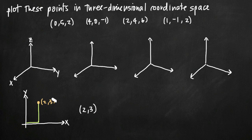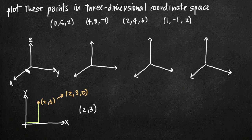So if we wanted to take the point (2,3) and plot it in three-dimensional coordinate space, we would need to assume we were actually moving to the point (2,3,0), where 0 is our z coordinate. We're not going to move any distance along the z-axis at all — we're staying in the x, y coordinate plane. We'd come out a distance of 2 along the x-axis, then move parallel to the y-axis up a distance of 3, and that point would be here with no height component along the z-axis.